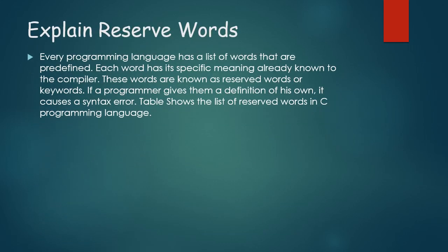Explain reserved words. Every programming language has a list of words that are predefined. Every word has a specific meaning already known to the compiler. These words are known as reserved words or keywords. If a programmer tries to redefine them, it causes a syntax error, because these words are predefined and must be used as specified by the programming language.